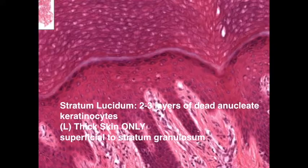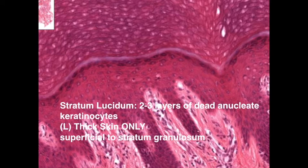Thick skin is also referred to as plantar skin and is located in two places: the palms of your hands and the soles of your feet. The next layer is only found in thick skin and is called the stratum lucidum. It is visible in certain sections between the stratum corneum and the next layer, the stratum granulosum.